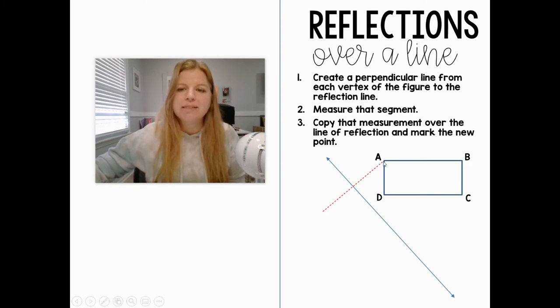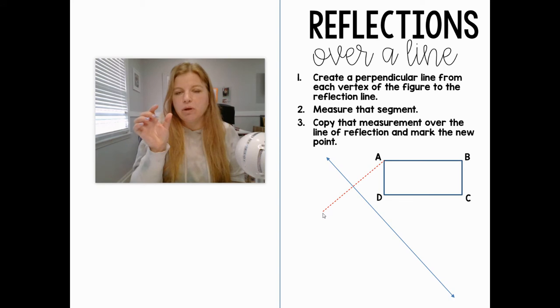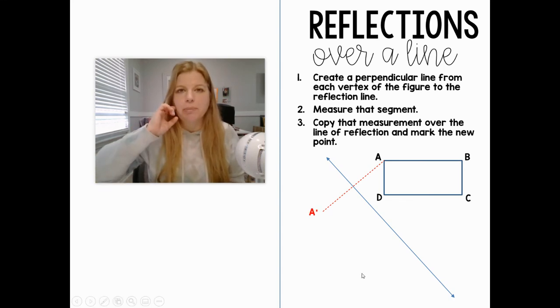That is how we reflect any point over a line. We create a perpendicular line from that point crossing through the line that we want, reflecting at a 90-degree angle. The measure of this segment is then copied over onto the other side. If you had a ruler, you would simply measure how long that is and then copy that length over, and that is where point A prime would be.